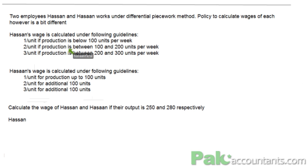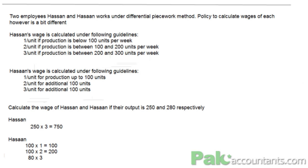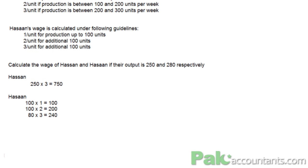In the case of Hassan, he has produced 250 units. This falls in the third category, so we simply multiply 250 by 3, giving a total wage of $750. In the case of Hassan, the first 100 units are calculated at $1, giving $100. The next 100 units, from 101 to 200, are calculated at $2 per unit, giving $200. The remaining 80 units are calculated at $3 per unit, giving $240. So in total: $240 plus $200 plus $100 gives us $540.